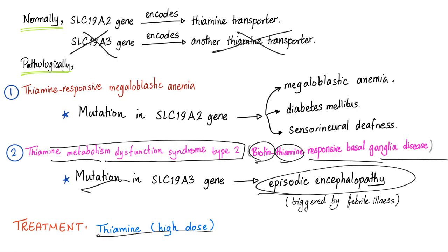How do you treat it? It's called biotin and thiamine responsive — so give thiamine, which is B1, and give biotin, which is B7. Usually this is lifelong therapy.